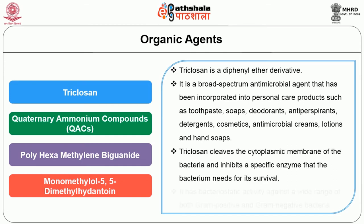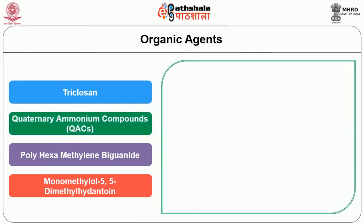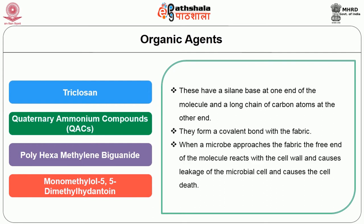Triclosan cleaves the cytoplasmic membrane of bacteria and inhibits a specific enzyme that the bacterium needs for its survival. It has bacteriostatic activity against a wide range of both gram-positive and gram-negative bacteria. The next one is quaternary ammonium compounds. They have a silane base at one end of the molecule and a long chain of carbon atoms at the other end. They form a covalent bond with the fabric. When a microbe approaches the fabric, the free end of the molecule reacts with the cell wall and causes leakage of the microbial cell, leading to cell death.